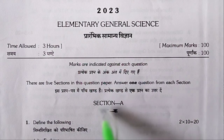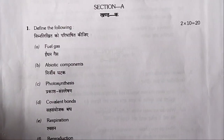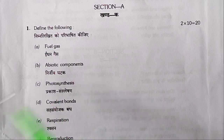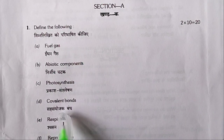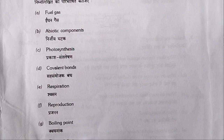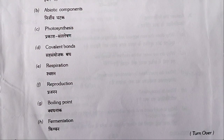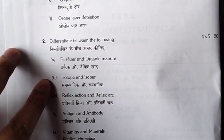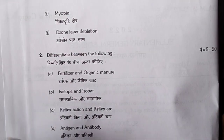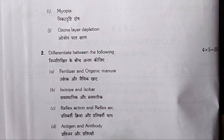In Section A, define the following: fuel gas, abiotic components, photosynthesis, covalent bonds, respiration, reproduction, boiling point, fermentation, myopia, ozone layer depletion.